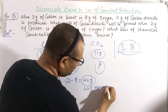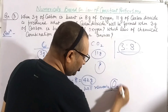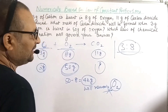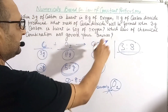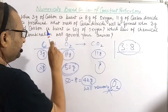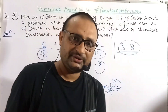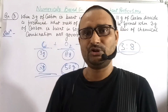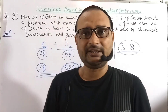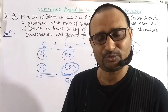That remaining oxygen will not be used in the formation of carbon dioxide. The amount of carbon dioxide formed is 11 gram, and this combination follows the law of constant proportions. In the next video I will discuss more numerical problems. Thank you, keep smiling — please subscribe, like, and share.